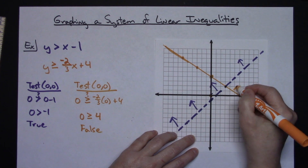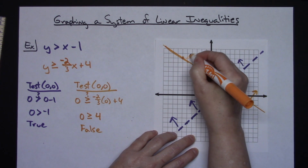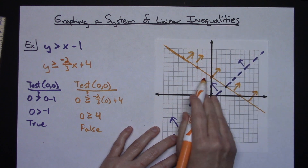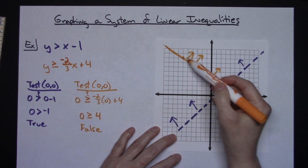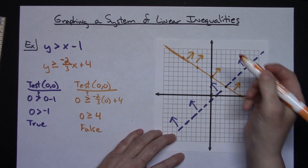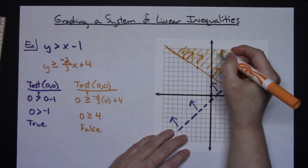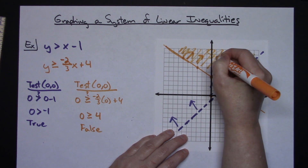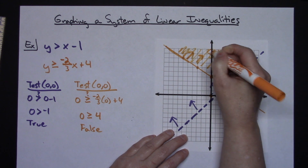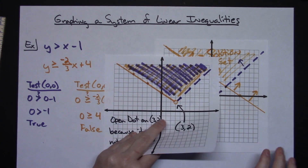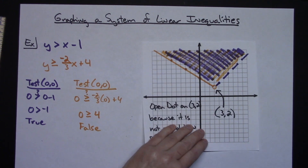On the other side of the orange line, every point will make it true, so I shade over there. Now the question is: what part got shaded twice? You've got purple arrows going this way and orange arrows going this way — the region that got shaded twice is where the solution set is. A lot of teachers will have you write 'solution set' in that area to clearly indicate it.